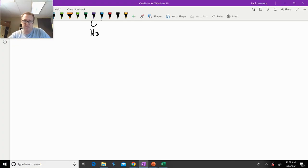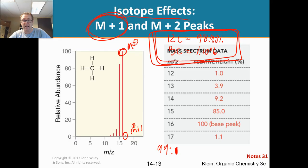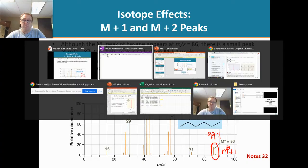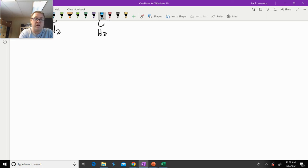The question is, why is that ratio now not 99 to 1? It was 99 to 1 with methane, but why is it not 99 to 1 in hexane? Well, it has to do with probability here. We already know the relative abundance of carbon 12 and carbon 13.